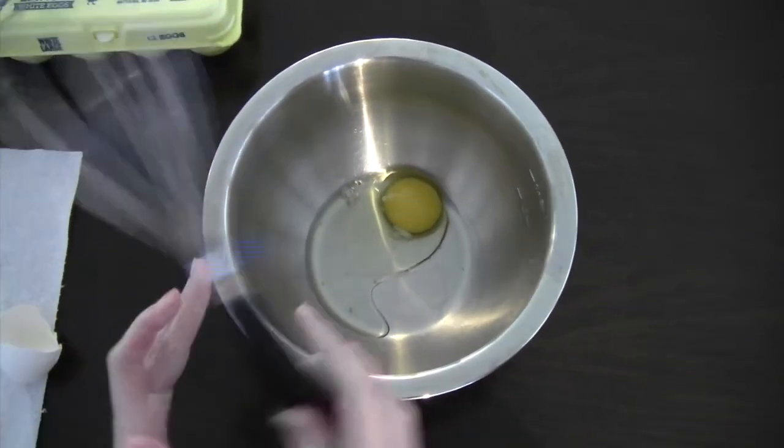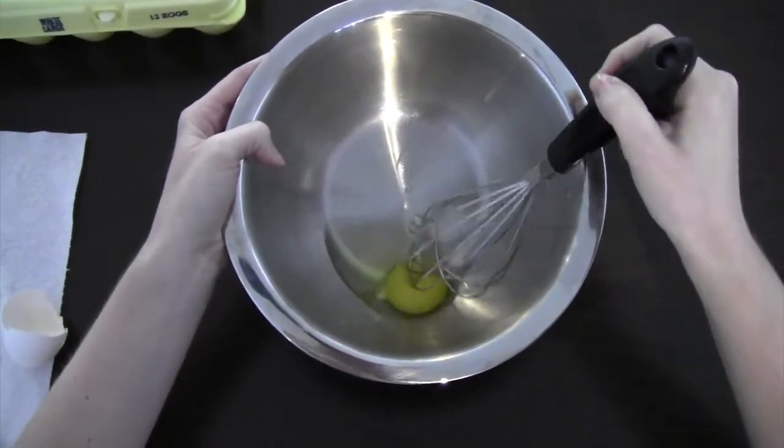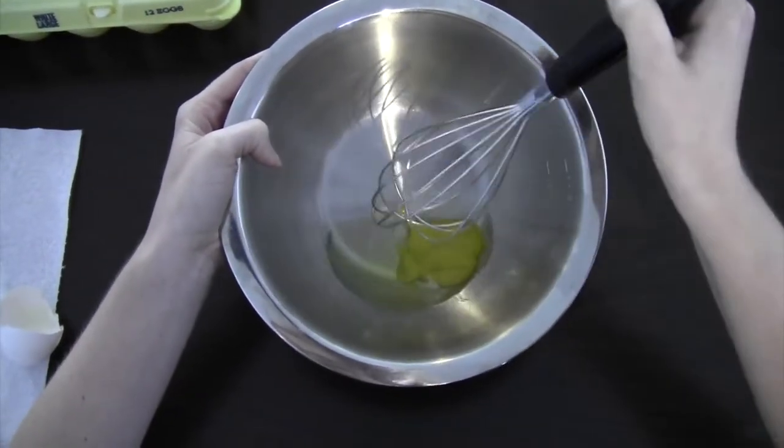Next we're going to whisk it. So I have my whisk here. And I'm just going to tilt the bowl over and I'm going to pop this yellow part. And that will help us blend it.